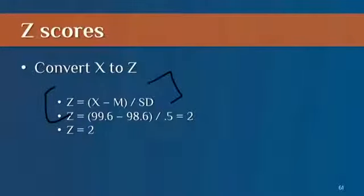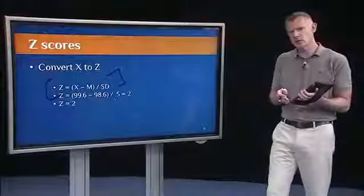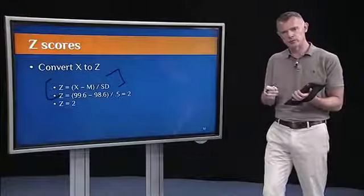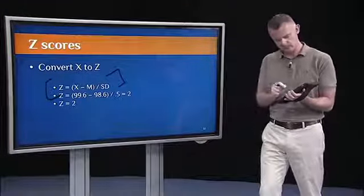I take the raw score, 99.6, subtract out the mean, 98.6, divide by the standard deviation, which was 0.5. So that's just 1 over 0.5, or 2. So this individual's Z score is positive 2. They are two standard deviations above the mean.